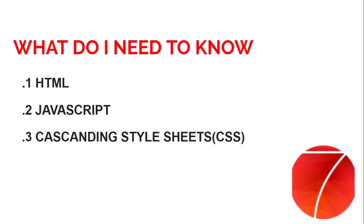So what do you need to know to start writing a Framework 7 app? Firstly, you need to know how to write HTML — with basic HTML knowledge, you can start. Secondly, you need to know JavaScript, which is used to create dynamic pages. Thirdly, you need to know CSS, but CSS is not heavily used in Framework 7 because it comes with an already-made UI. You may just need it to add margin, padding, or create custom styles.